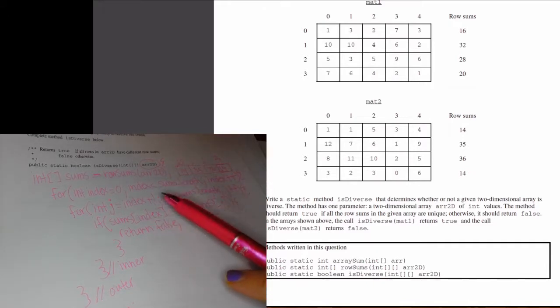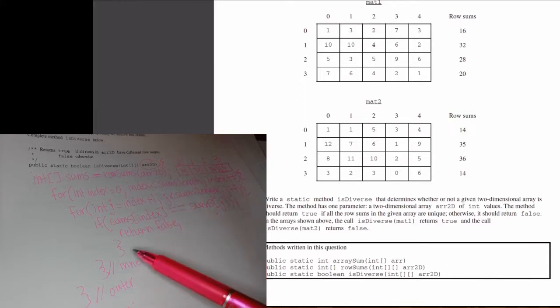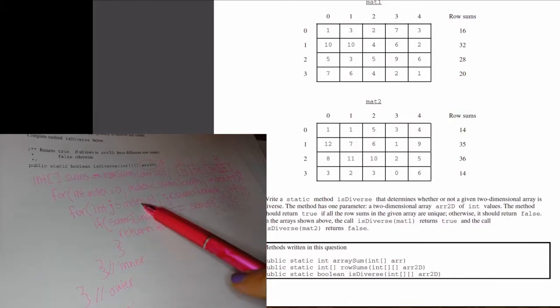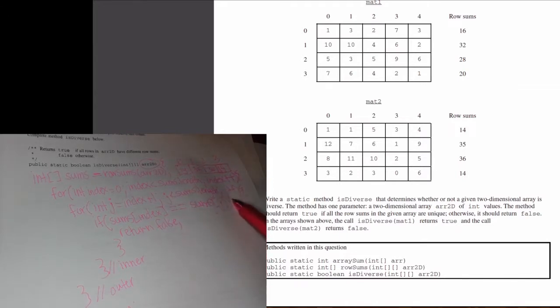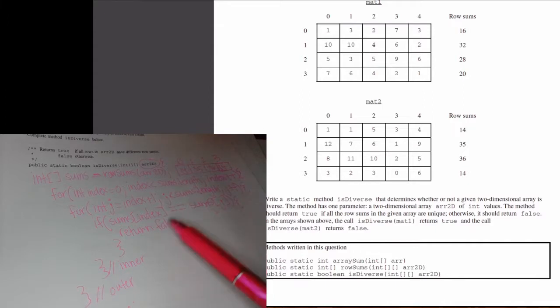No, it's not, so we are going to skip this return false and go right back up here and add 1 to j. So now we are comparing 14 to 36. Is 14 and 36 the same? No it's not, so we're going to skip this part, go back up, add 1 to j. So now we're comparing sums sub 0 to sums sub 3. Is 14 the same as 14? Yes it is, so we're going to return false and exit out of all of this.